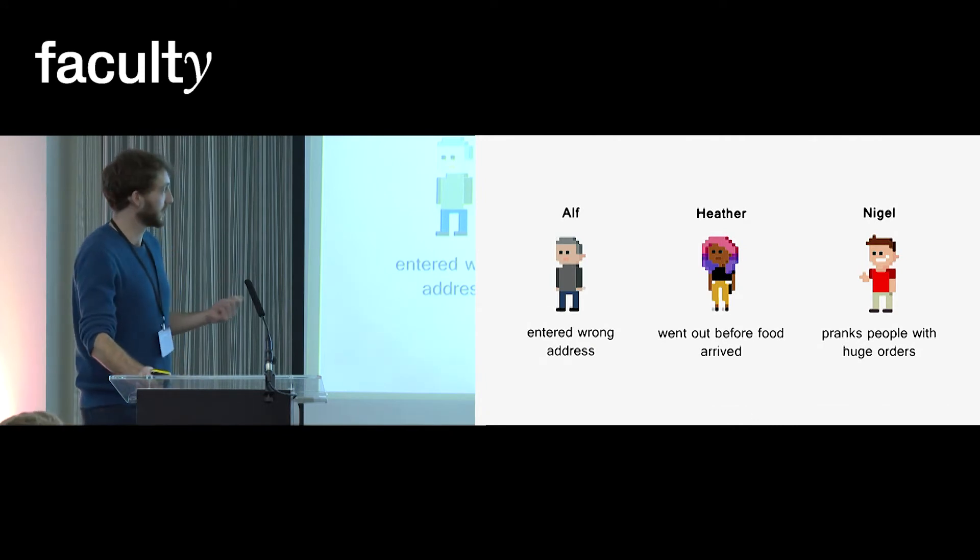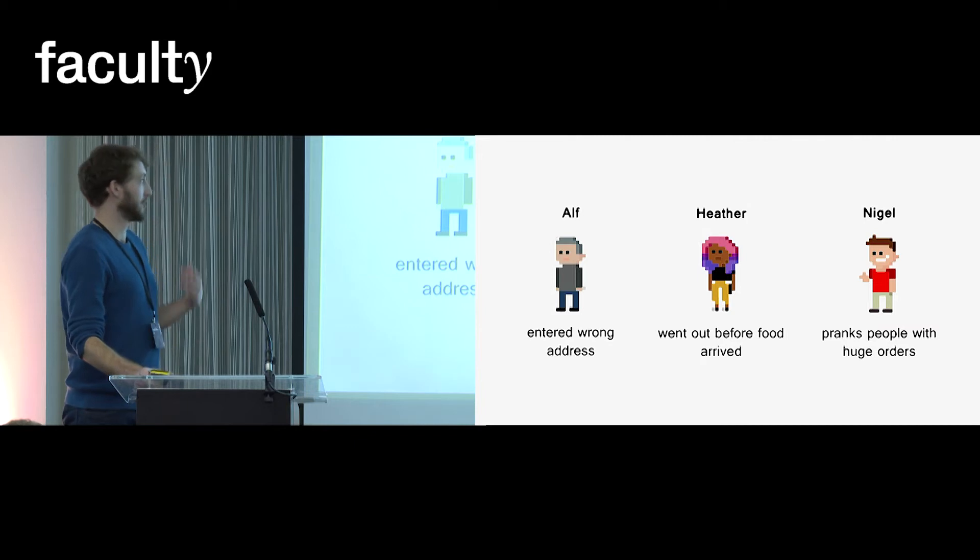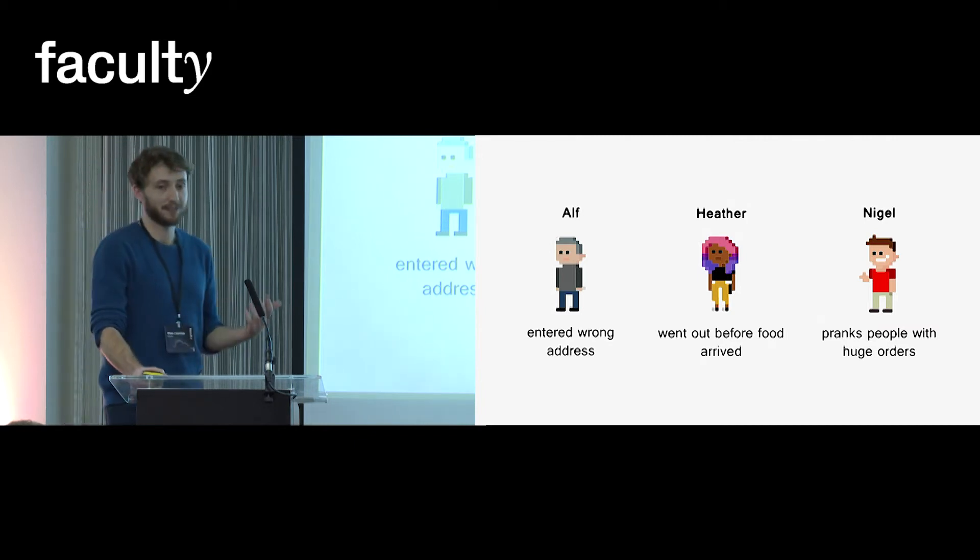So what is causing these orders? Here are three different people, each of whom made an undeliverable order for a different reason. Alf on the left entered the wrong address and so didn't get his food. Heather got impatient waiting for her food and so went out to a party before it arrived.